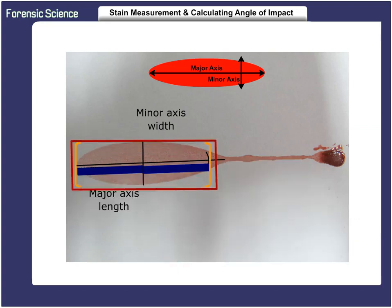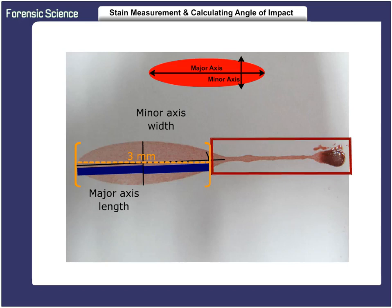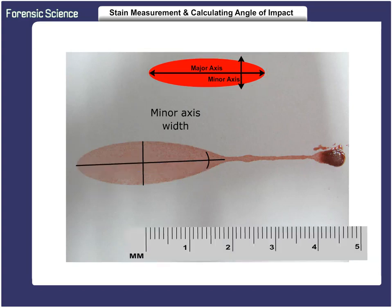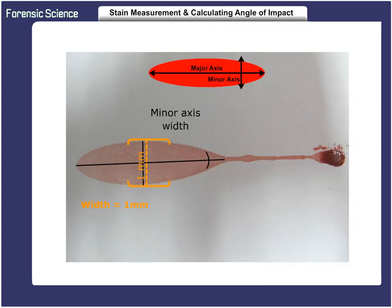We now fit an ellipse to the oval shape of the stain. The width of the ellipse of the stain is 3 millimeters. Keep in mind that you must never include any portion of the satellite, scallop, or spine that may be present in the stain. Including that in the measurement would alter the overall length-to-width ratio and change the calculated impact angle. You need to envision a perfect ellipse superimposed on the stain. Using a metric ruler, we determined that the width of the stain at its widest point is 1 millimeter, and the length of the stain is 3 millimeters.